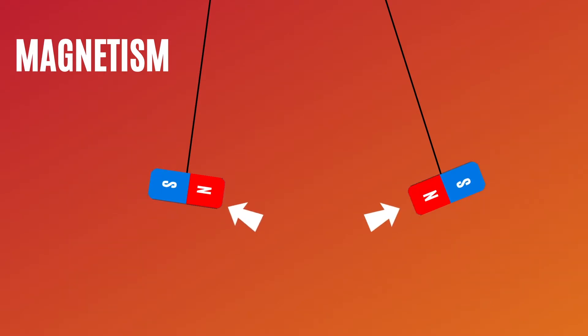Magnets repel from the same pole, but attract to the opposite poles.